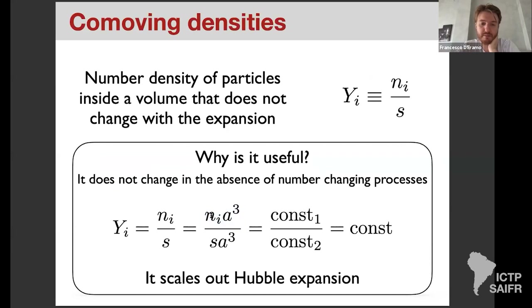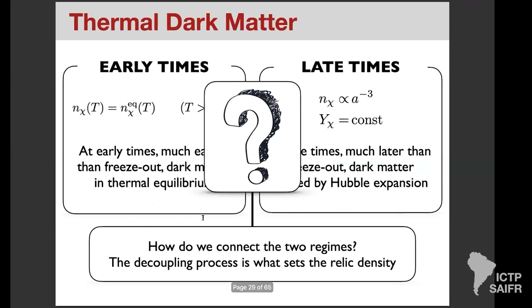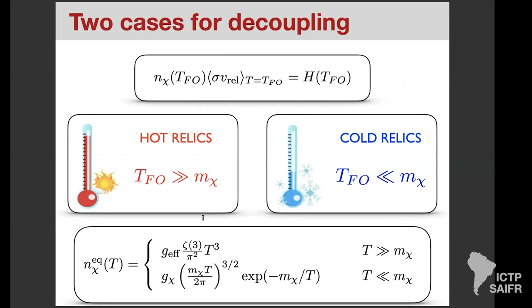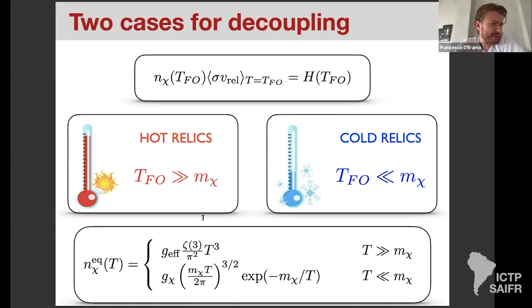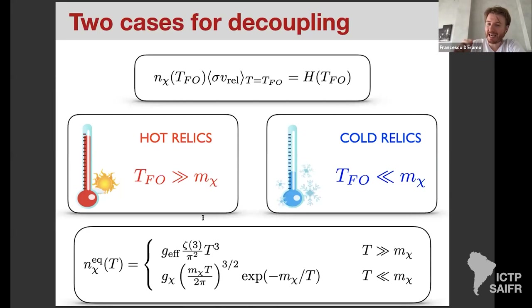Anupam asks: after the QCD phase transition, degrees of freedom decrease — doesn't entropy decrease then too? Well, the entropy density decreases if g★ decreases, and some entropy is created in the phase transition but it is a small amount. In first approximation entropy is conserved even during the QCD phase transition. The key is that it is not s alone that is conserved — it is s·a³, the total entropy, that is conserved, not the entropy density.